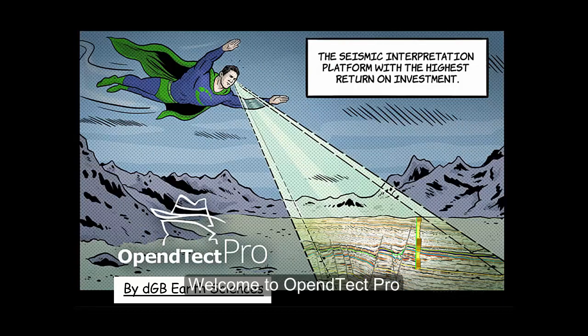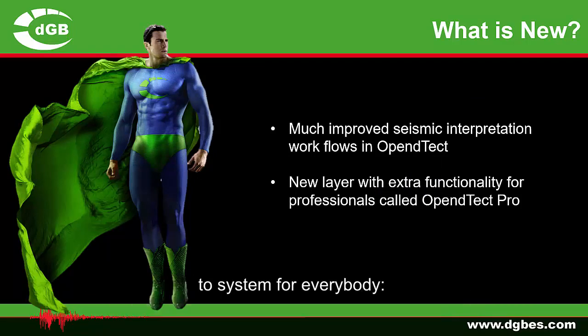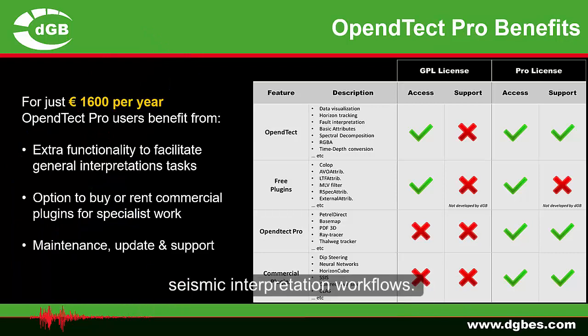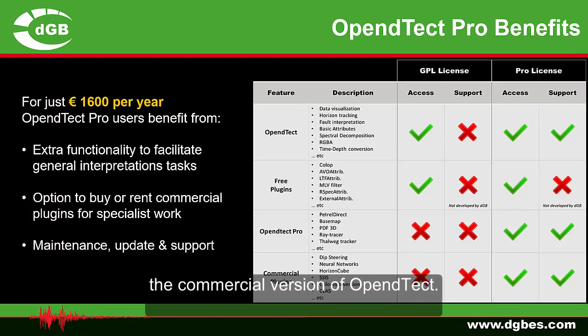Welcome to OpenDetect Pro. OpenDetect is transforming itself from a system for specialists to a system for everybody — generalists as well as specialists. OpenDetect version 6 comes with new and greatly improved seismic interpretation workflows. Professional users receive extra functionality in OpenDetect Pro, the commercial version of OpenDetect.